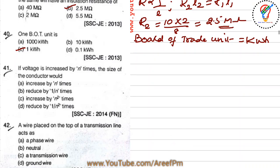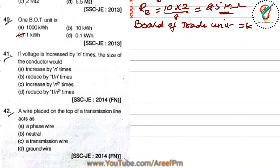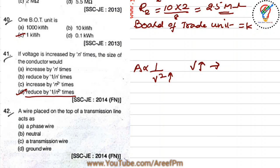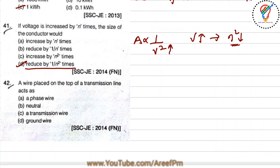Next question: if the voltage is increased by n times, the size of the conductor will be? The cross-sectional area of the conductor is proportional to 1/V². So if the voltage increases by n times, the size of the conductor decreases by n² times — that is, 1/n² times. Option D is the right answer.